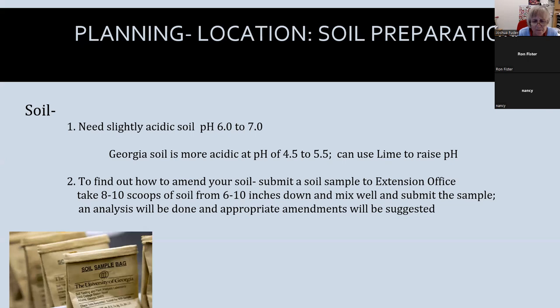Our soil here has a pH of 4.5 to 5.5, so we'll need to raise the pH by adding lime. Your soil test report will tell you how much lime to use. You can also call the extension office and they'll explain the different types of lime and the best time to apply it.